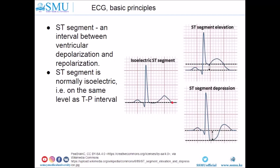In case of ischemia or myocardial infarction, you can detect elevation or depression of the ST segment. For example, you can detect a 2 mm elevation of the ST segment compared to the TP segment. In another case, you can detect almost 3.5 mm depression of the ST segment compared to the TP baseline.